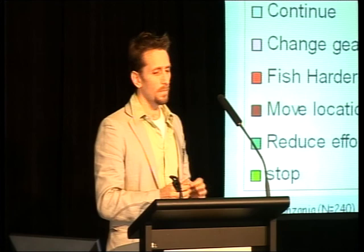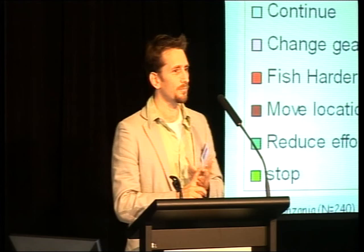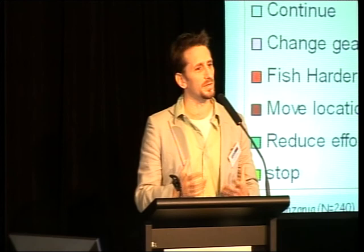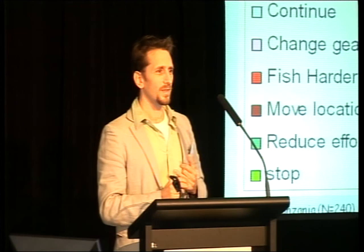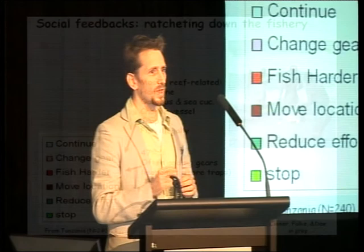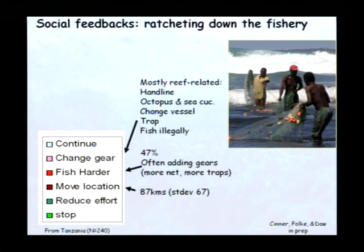Fishers that said they would change gear would mostly stay within reef-related occupations — including changing to hand lines, switching to octopus and sea cucumbers, changing vessels, doing trap fisheries, and importantly, being more inclined to fish illegally, such as poaching inside protected areas or using illegal gear. Fishers that would fish harder would fish an average of about 50% harder, often achieved by adding gear — so fishers with 100 meters of net would add 50 meters, and fishers with 10 traps would add an additional 5. Fishers that would move location would move an average of about 90 kilometers, which depending on the size of the seascape could either displace effort or simply redistribute it within the managed area. Those that would reduce effort would do so through occupational mobility — switching temporarily to the informal economic sector or the agricultural sector — but respondents were clear this would happen over months, with one eye still on the fishery.